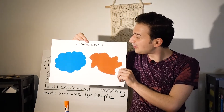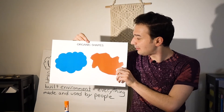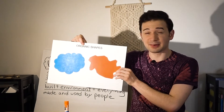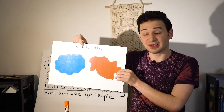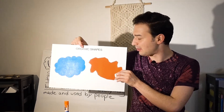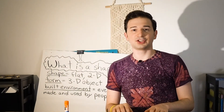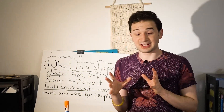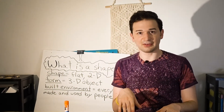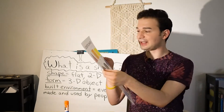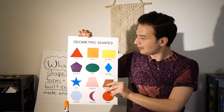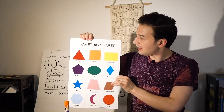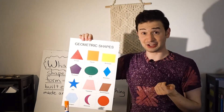Organic shapes are made of more curved lines and they don't always look the same on both sides. Organic means having to do with life, so these types of shapes are usually found in living things, but they're also found in the built environment. When you have a shape that is flat and looks the same on both sides or is very even, those are examples of geometric shapes — like the triangle and the square — not organic shapes.